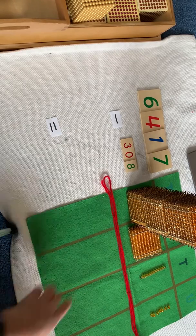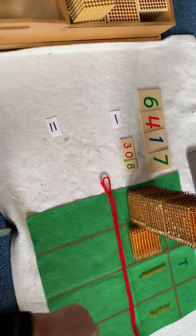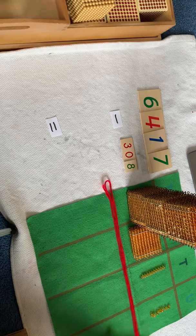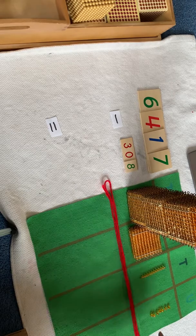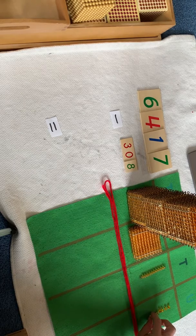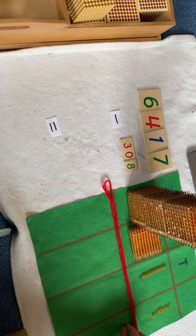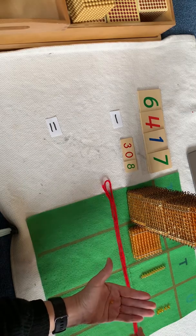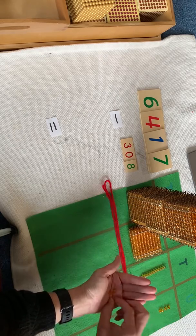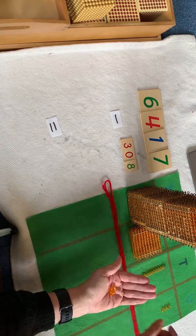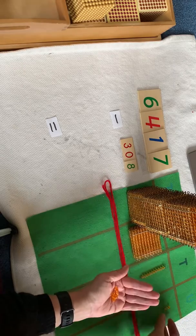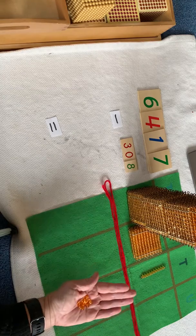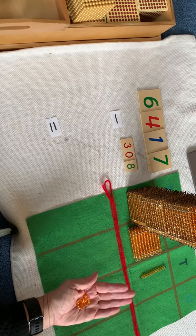And we're going to take away 308. So when I show this to my students, I always physically try to take away the bottom number. Take away one, take away two, take away three, take away four, take away five, take away six, take away seven. Uh-oh. Oh, I don't have enough.